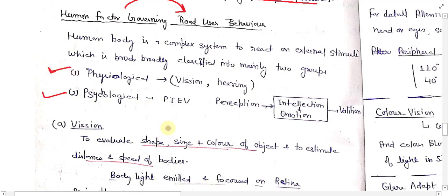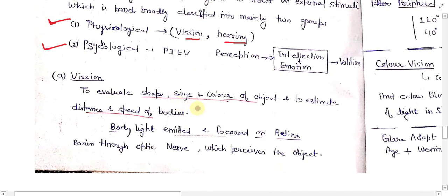Terms related to physical activity are known as physiological, and terms related to mental activity are known as psychological. Under physiological there are two activities: vision and hearing of a person — how vision and hearing affect whether someone is a good or bad driver. Under psychological activity there is a theory known as the PIEV theory.